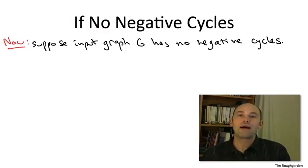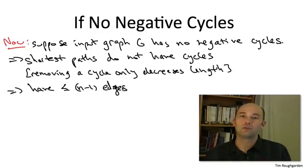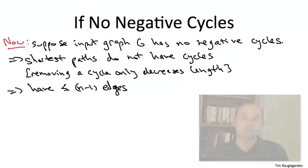So if I throw out this directed cycle from this path, I get a new path to the same destination V, and its overall length has only gone down. Discarding cycles only makes paths shorter. That's why there's a shortest path with no repeated vertices, that is, with at most N minus one edges.